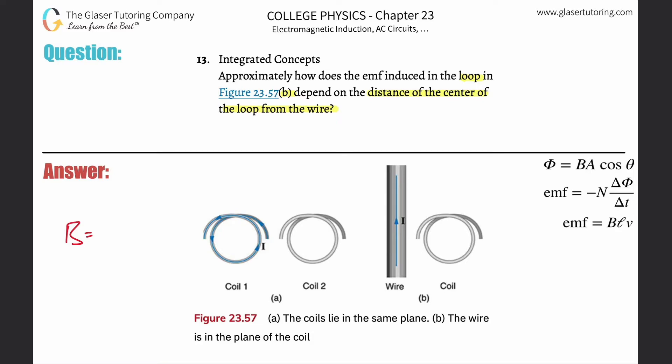It's going to simply be the permeability of free space, which is μ₀, multiplied then by the current flowing through the wire, then divided by 2π multiplied by the distance. This represents the distance between the wire and its particular point of interest.